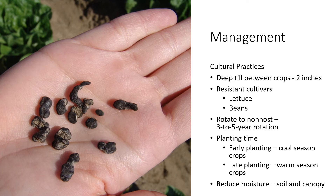For management of Sclerotinia diseases, we're going to make sure that we're tilling at least two inches deep to bury sclerotia. Sclerotia need to be within the top two inches of soil in order to germinate under ideal conditions. If we can deep till and bury them, we keep them from germinating, and if they do imbibe water and are not able to germinate, they'll start decomposing.